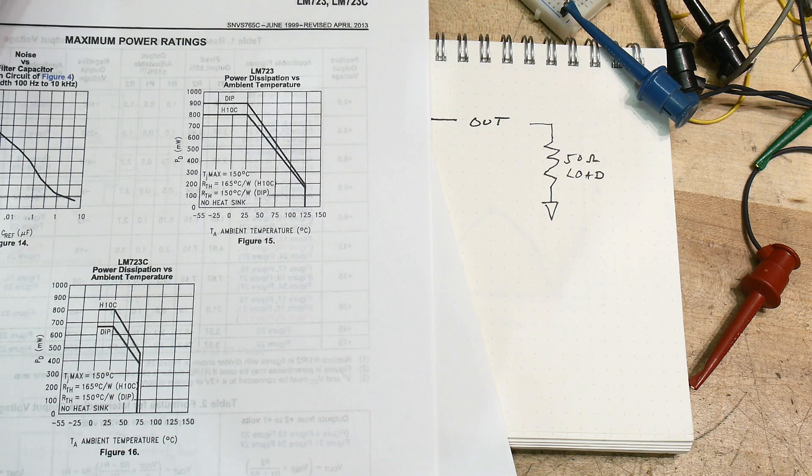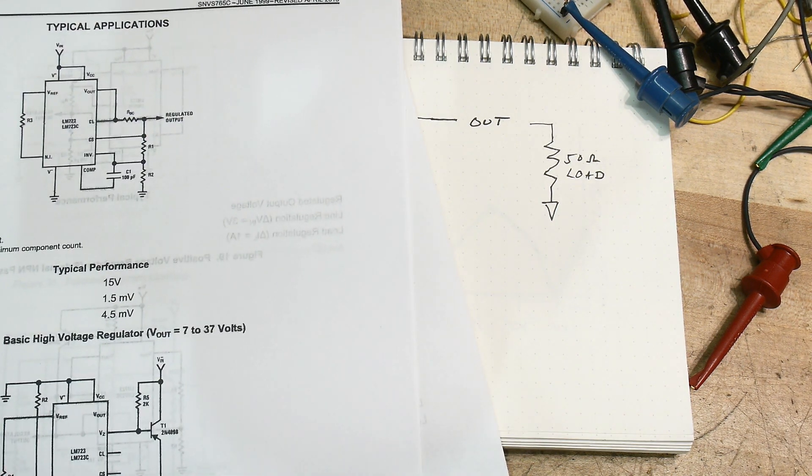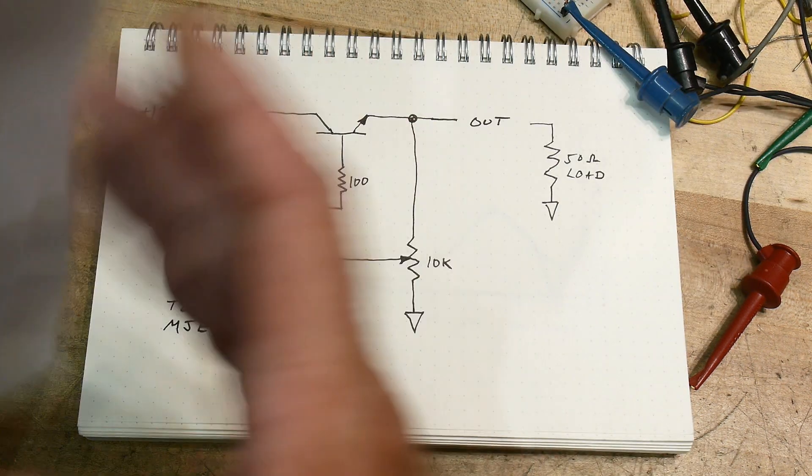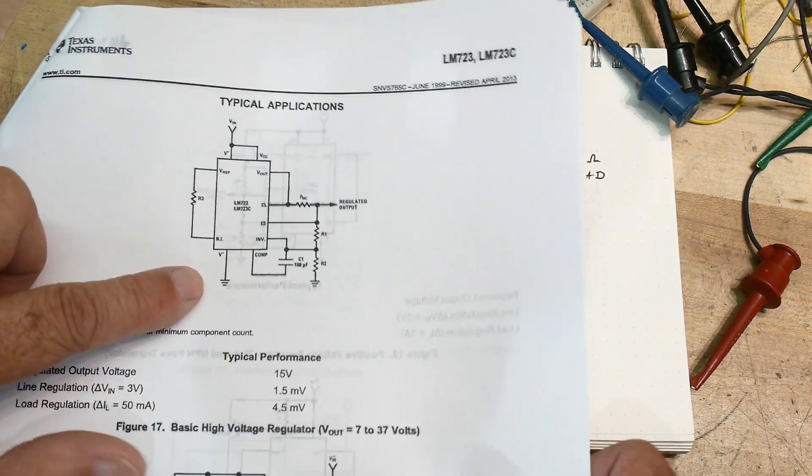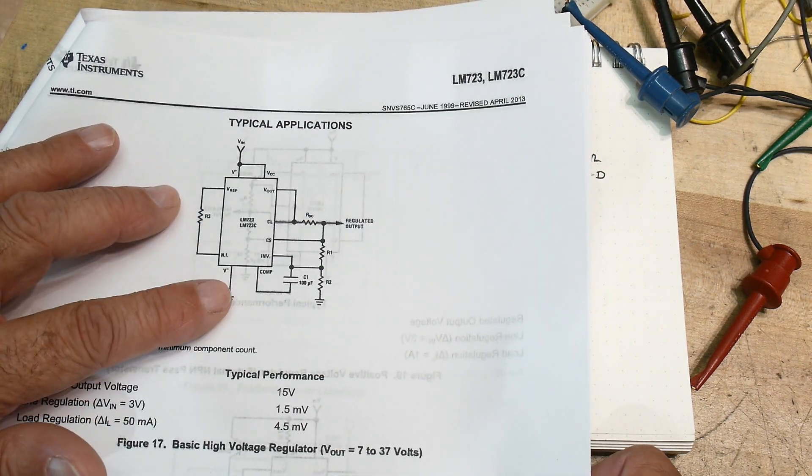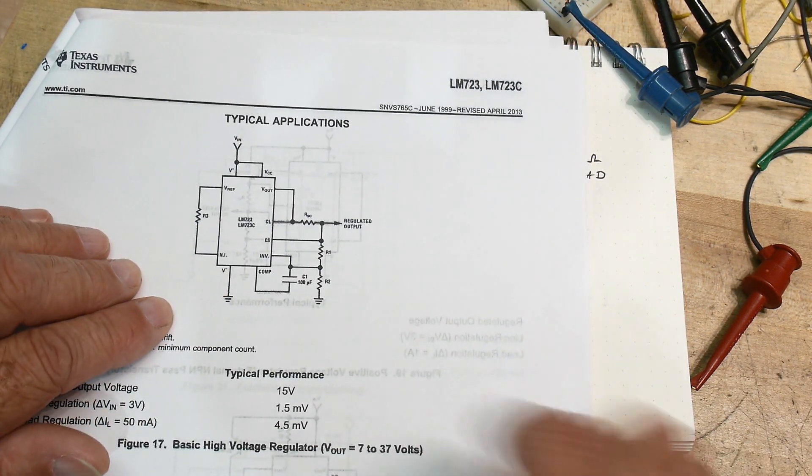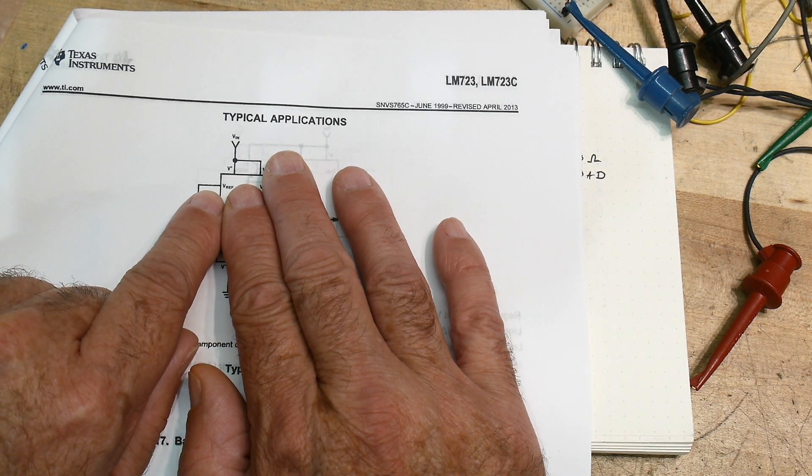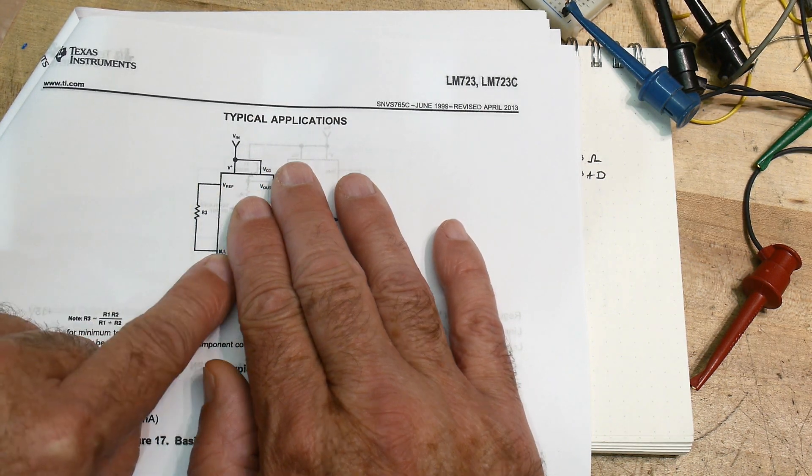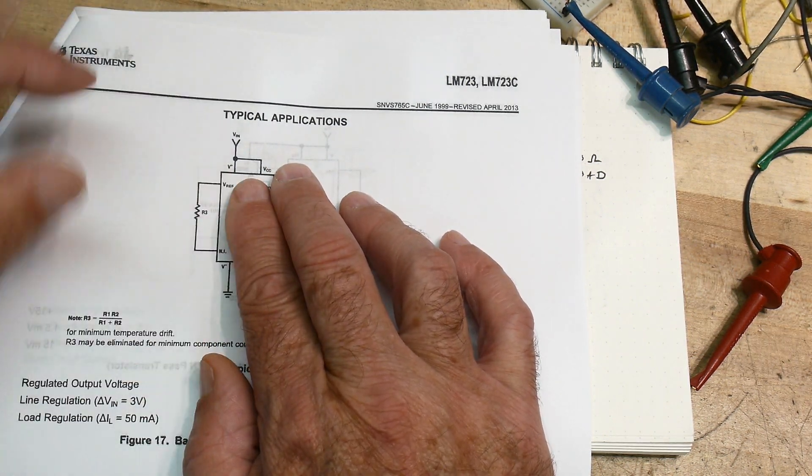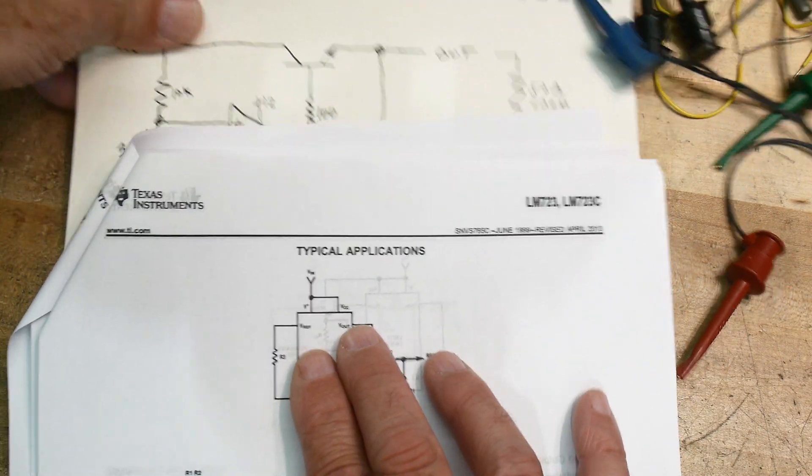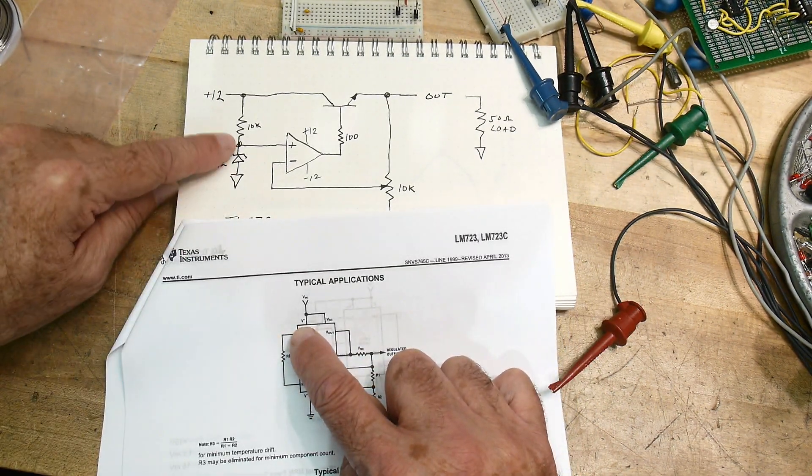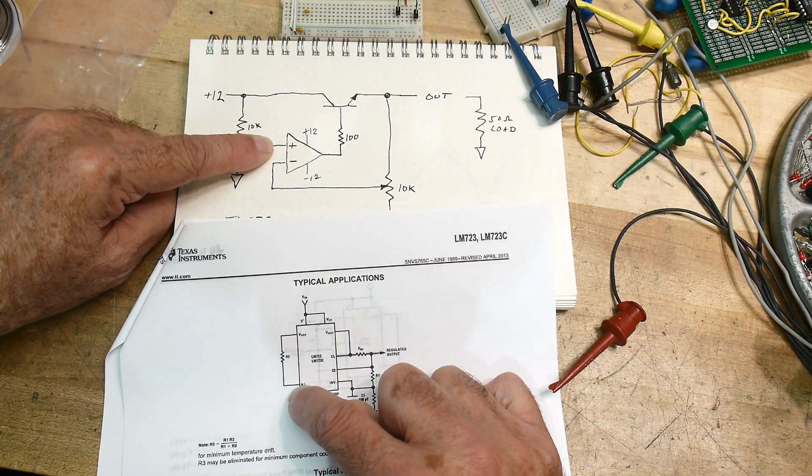So how would you wire this thing up? There's usually a sample, a typical application. So you always see them this way, so it's totally unintuitive what's going on. But here's our voltage reference, so that's the voltage coming out of the zener diode.